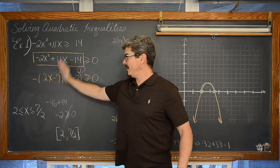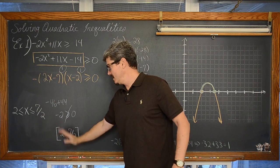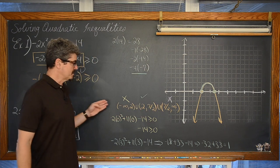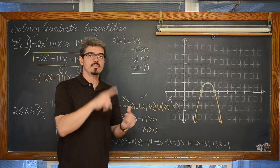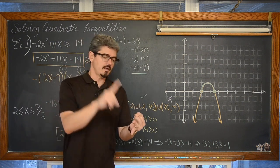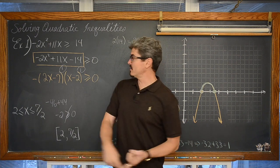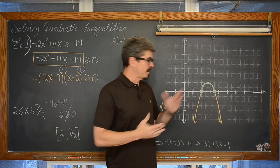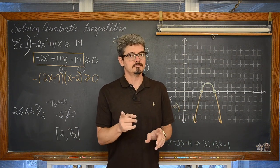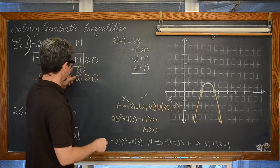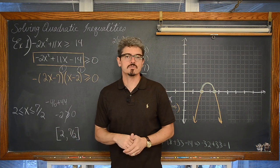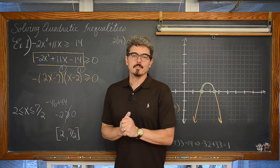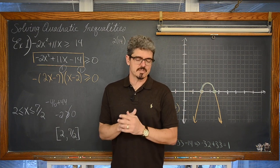That is how you solve a polynomial inequality. Get it set equal to zero, factor, set each factor equal to zero, solve it, and then either do all that work of testing those intervals along the x-axis. Or, if you know something about end behavior and finding those x-intercepts, and the multiplicity, you could just do a sketch and let the sketch answer your question. Doing all this work of checking the intervals is something you have to do when you solve rational inequalities — there is no easy way to quickly sketch a graph and get your answer from there.